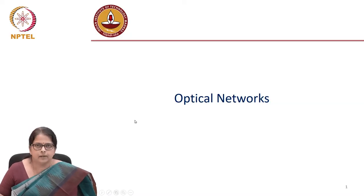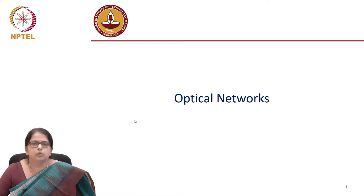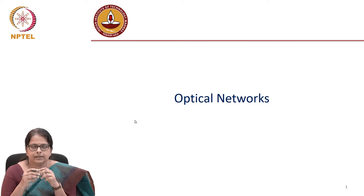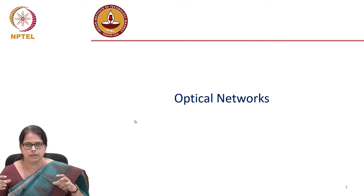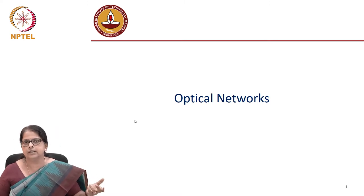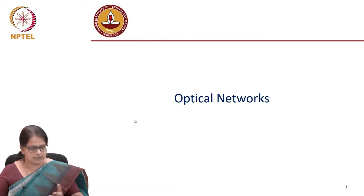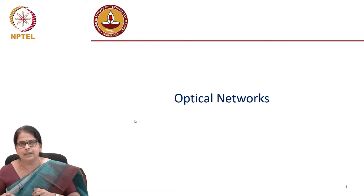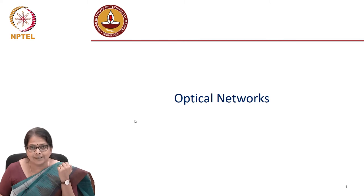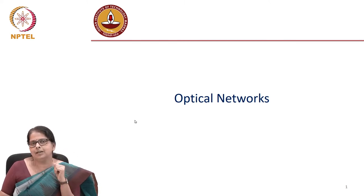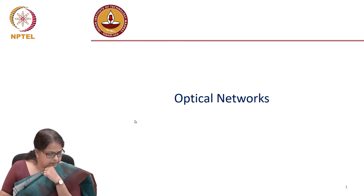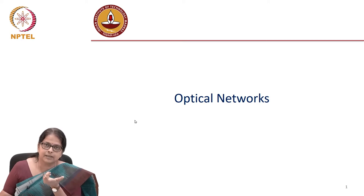This is a module on optical networks. Until now through the course, we have learned the ingredients of a point-to-point link. We now know how to pick our transmitter, how to choose our receiver, what distances the signal can be transported, and how to do performance evaluation in terms of quality factor, signal-to-noise ratio, bit error rates, and so on. A transmission system refers to this transmitter, receiver, and the channel.